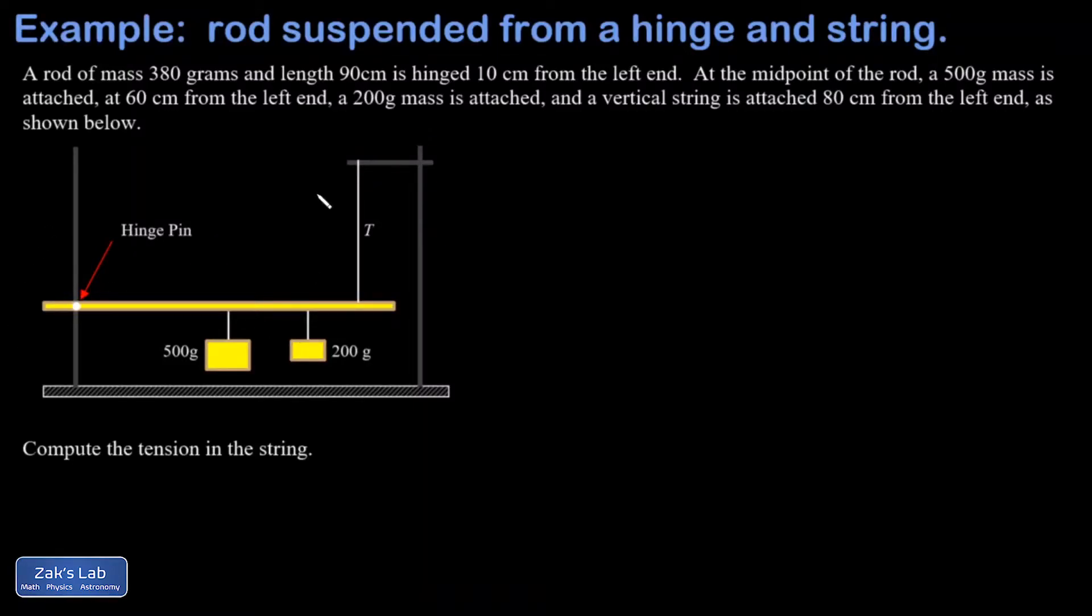In this equilibrium problem I'm trying to get the tension in the string over here and I have a heavy rod with a mass of 380 grams. I'm given the length of the thing and there's a hinge pin through it 10 centimeters from the left end and I'm given the locations of these two hanging masses.